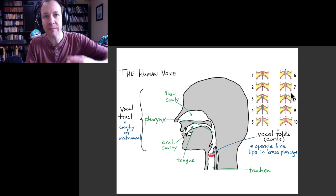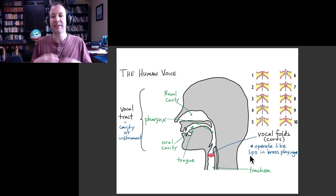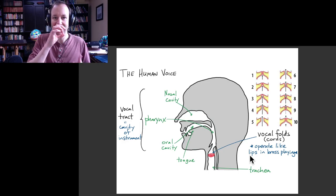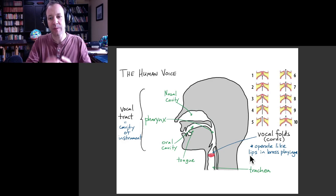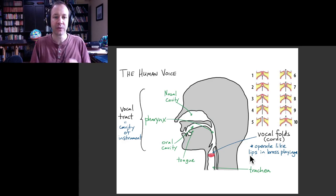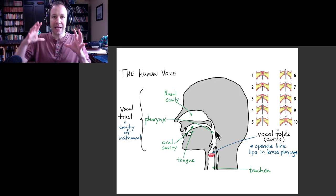Obviously, that doesn't sound very much like singing. But that might be something similar to what the vocal folds would sound like on their own, if they were right at the opening of your mouth, but they're not. So what happens is that the sound produced by the vocal folds then goes into what's called your vocal tract. That includes the nasal cavity, the oral cavity, and the pharynx.